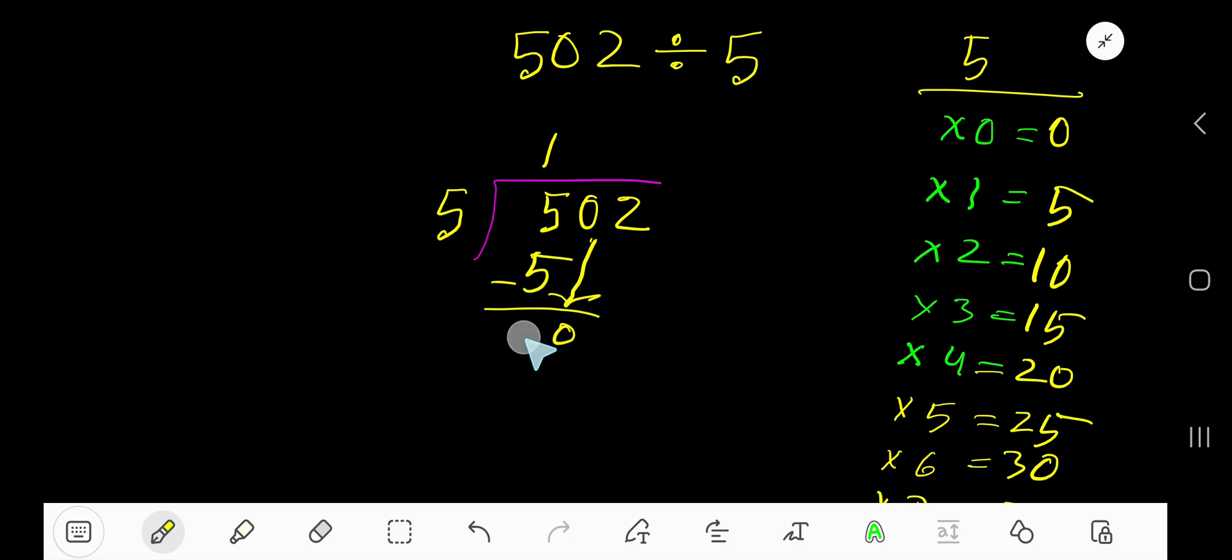Now 5 goes into this 0 how many times? 5 goes into 0 zero times. Write 0. 0 times 5 is 0. Subtract 0. Bring down this 2. 5 goes into this 2 how many times?